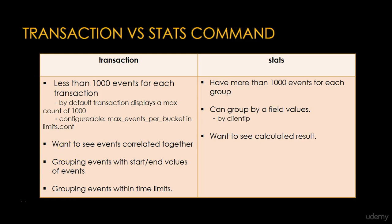You should use the Stats command when there are more than 1000 events for each group. Use Stats when you want to group by field values — for example, grouping by client IP using stats by clientip — or when you want to see results in a calculation. If you have a choice between Transaction and Stats, you should use Stats, as Stats is faster and more efficient, especially for larger Splunk environments. In this lecture, I discussed the Transaction Command and Transaction versus the Stats command. Thank you for watching this video.